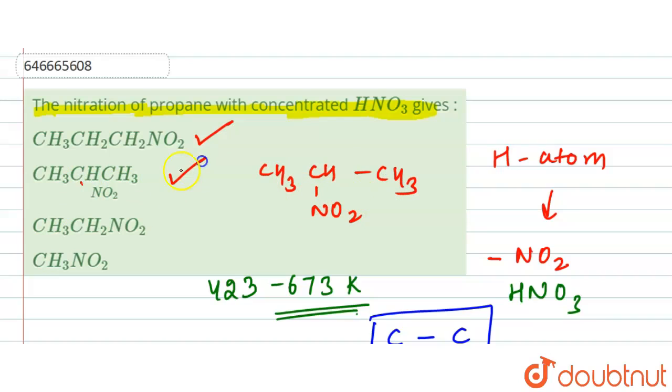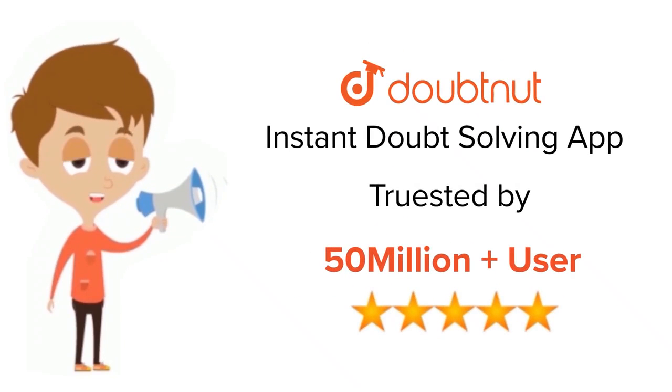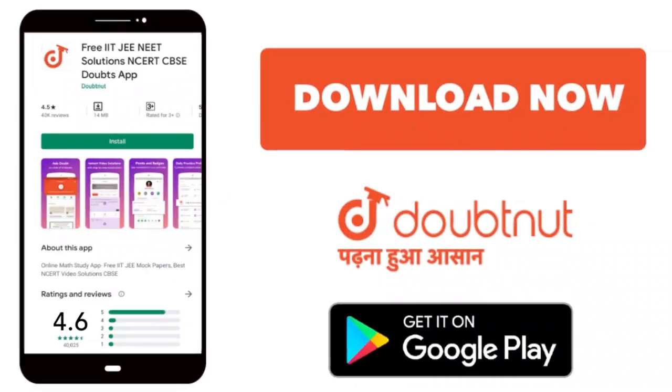This means that all given options are the answer to this question. Thank you. For class 6-12, IIT-JEE and NEET level, trusted by more than 5 crore students, download Doubtnet app today.